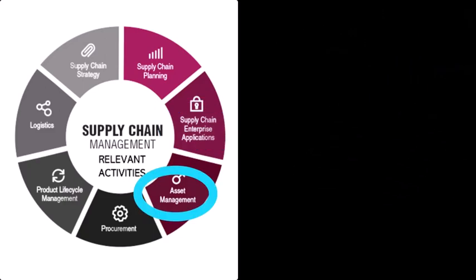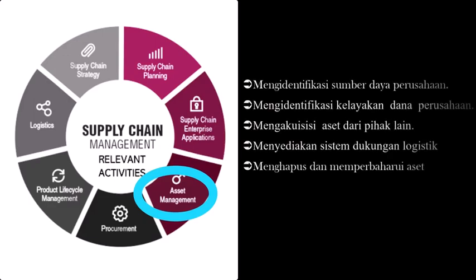Selanjutnya tentang asset management. Asset management adalah sebuah proses kegiatan yang terstruktur yang mencakup pengelolaan semua asset sebagai sumber daya dalam mendukung penyediaan pelayanan. Sistem pengelolaan asset dilakukan untuk meningkatkan kegiatan operasional pada bisnis. Beberapa kegiatan yang dilakukan terkait management asset: pertama, mengidentifikasi sumber daya atau kekayaan yang dibutuhkan oleh perusahaan. Kedua, mengidentifikasi kelayakan atau kebutuhan jumlah dana yang dimiliki oleh perusahaan. Ketiga, mengakuisisi atau memperoleh asset dari pihak lain. Keempat, menyediakan dan menyiapkan sistem dukungan logistik dan pemeliharaan pada asset yang dimiliki oleh perusahaan.